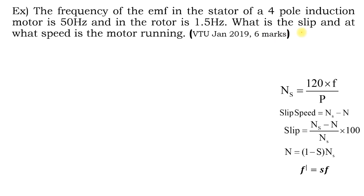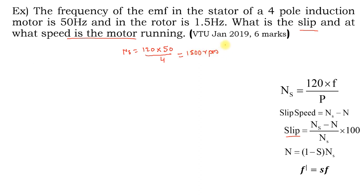In this problem they are asking us to find the slip and speed of the induction motor. To find the slip, ns is required. ns = 120 × f / P = 120 × 50 / 4 = 1500 rpm.